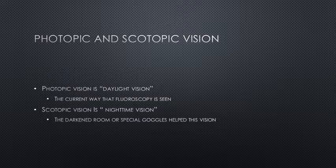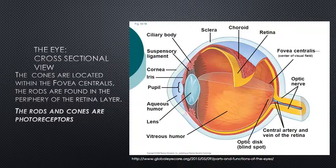Fluoroscopists had to dark adapt before the image intensifier was developed because the images were so dim. This meant sitting in a dark room for about 15 minutes or wearing specialized red-lens goggles when viewing the fluoroscopic screen. Dark adapting means they were activating the rods in the peripheral of the retina. Let's look at the anatomy of the eye — this is foundational to understanding the development of fluoroscopic equipment.